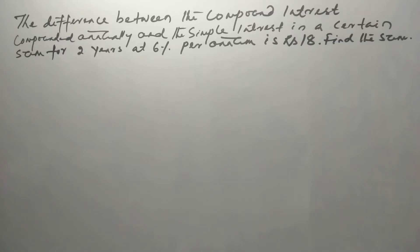The difference between the compound interest, compounded annually, and the simple interest on a certain sum for 2 years at 6% per annum is Rs. 18. Find the sum.